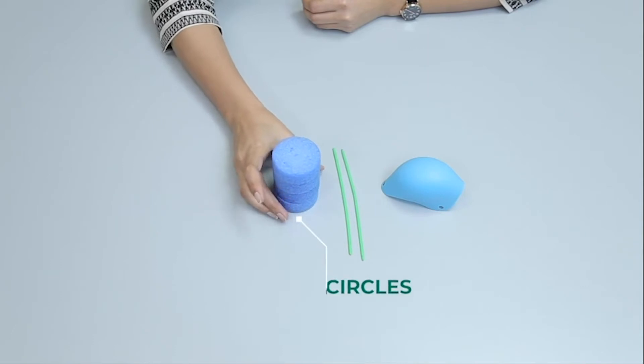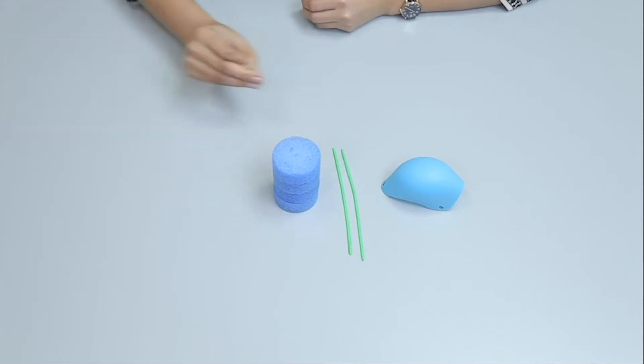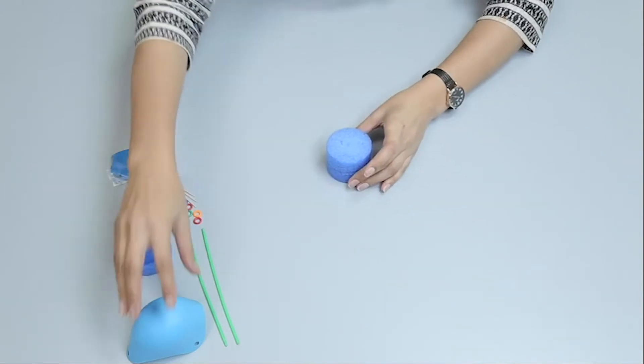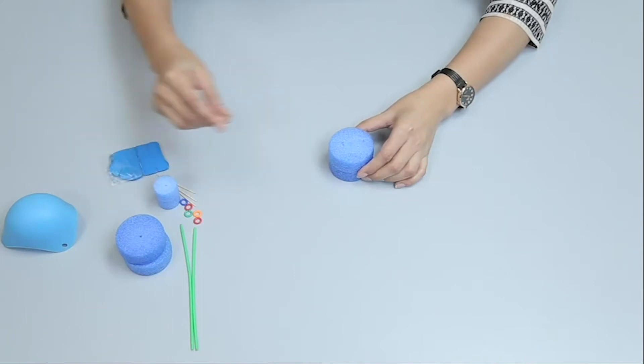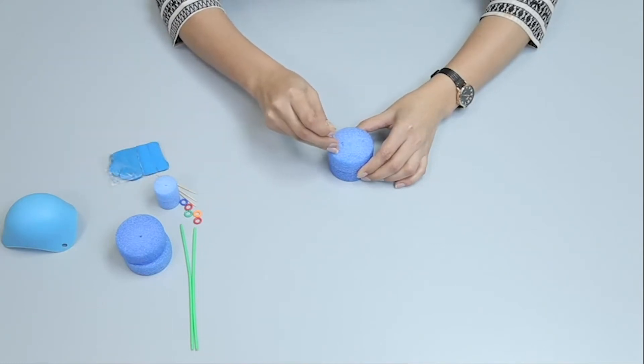Place two foam circles one above the other and push two toothpicks on the edges of the two foam circles. Attach two foam circles for making the feet of the monster.